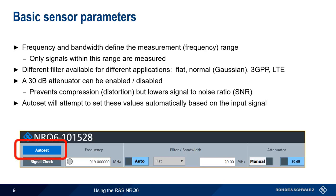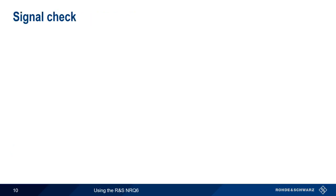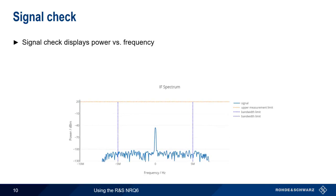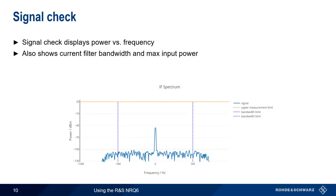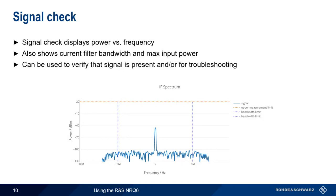The AutoSet function can be used to set these values automatically based on the input signal characteristics. Another useful function is SignalCheck, which displays power versus frequency similar to a spectrum analyzer. In addition to this trace of power versus frequency, SignalCheck also shows the current filter bandwidth and the maximum input power. SignalCheck is useful when verifying that a signal is present, and it can be used to help in troubleshooting.